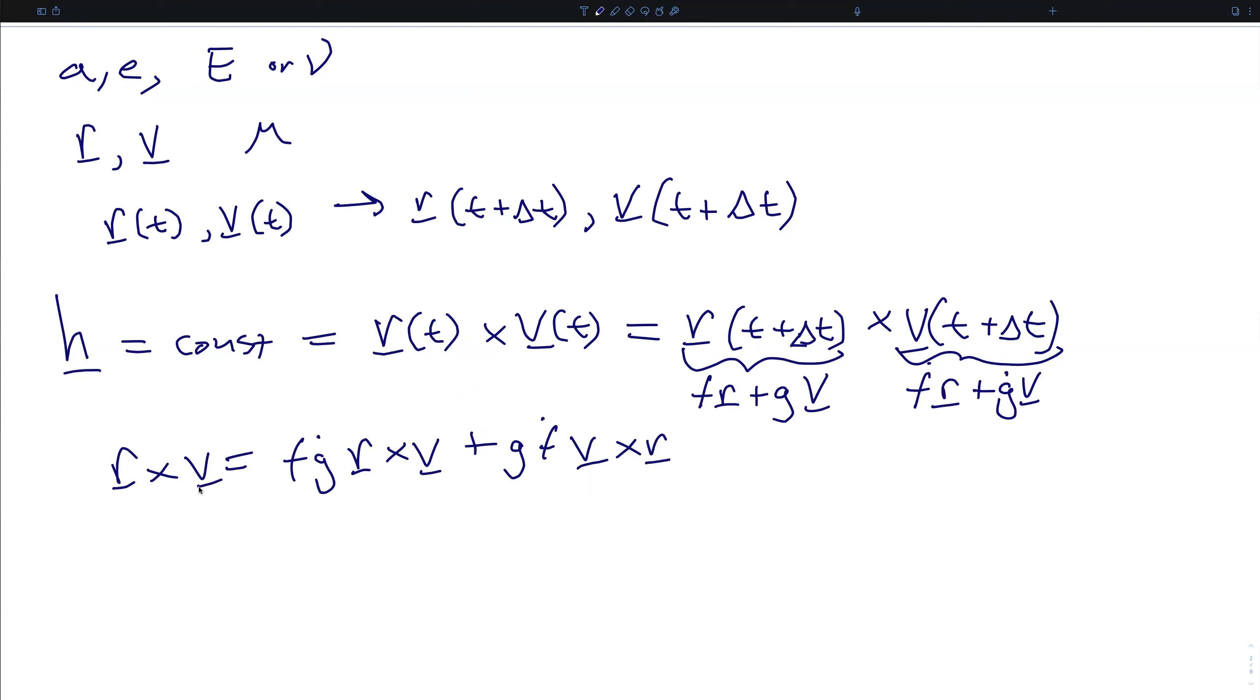That is, R cross V is equal to f g dot times R cross V plus g f dot times V cross R, and by the anticommutative nature of the cross product, this term is the same as negative R cross V. If we divide through by R cross V, we get the relationship f g dot minus g f dot is equal to one.